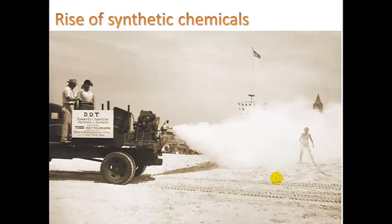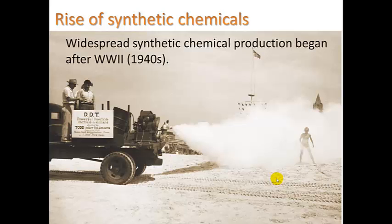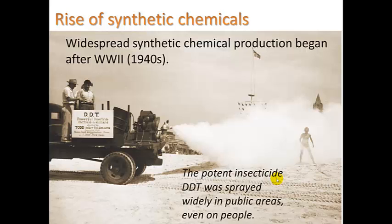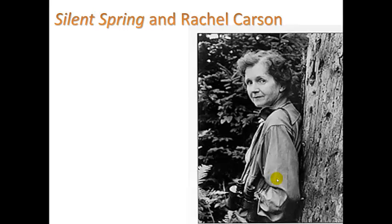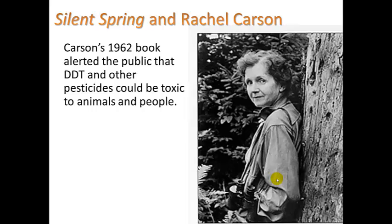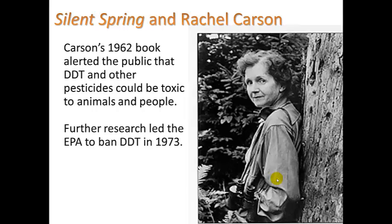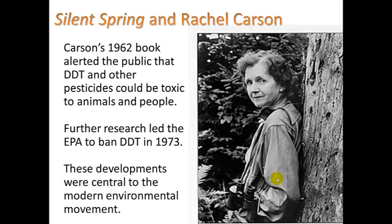This rise of synthetic chemicals really started in the mid-1900s after World War II, when widespread synthetic chemical production began. There is a picture of the potent insecticide DDT being sprayed on a beach in New York — it was used widely in public areas. Rachel Carson wrote her famous book Silent Spring in 1962, alerting the public that DDT and other pesticides could be toxic to animals and people. Further research led the EPA to ban DDT in 1973, and these developments were central to the modern environmental movement.